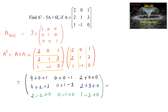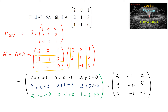So A squared is equal to the 3×3 matrix: [5, −1, 2; 9, −2, 5; 0, −1, −2].